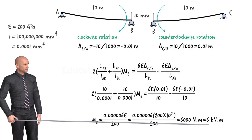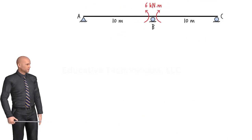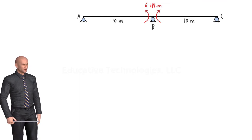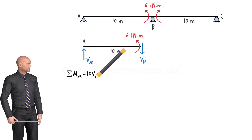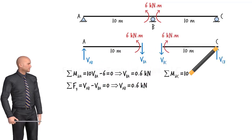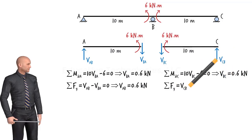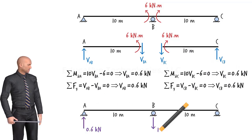This is the bending moment induced at B by the support settlement. Knowing MB, we can determine the member-end shear forces using the static equilibrium equations. From segment AB and segment BC, we obtain the results, and therefore the support reaction forces caused by the settlement at B are determined.